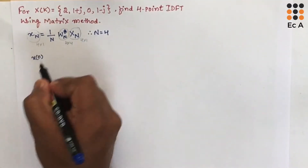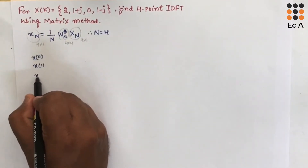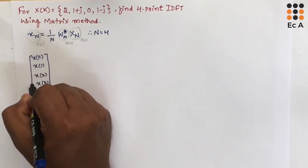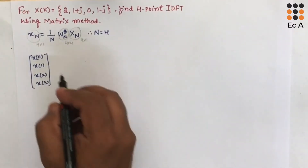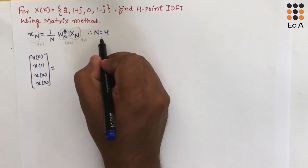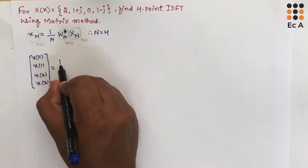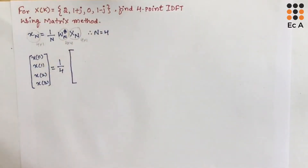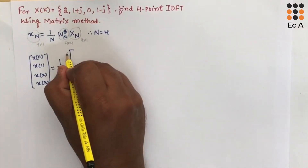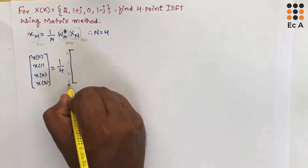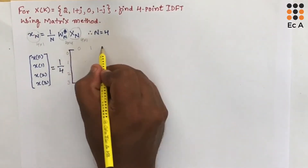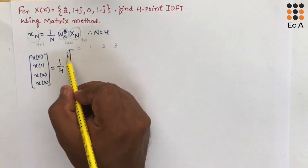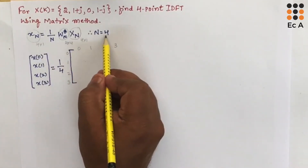Let us write the matrix. The 4×1 output matrix contains X(0), X(1), X(2), X(3). It equals (1/4) times the Twiddle factor matrix. To write the 4×4 Twiddle factor matrix, we index rows and columns with values 0, 1, 2, and 3, since N = 4.